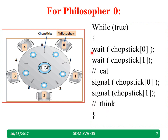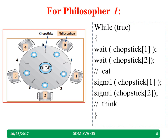After some time the philosopher feels hungry again, takes the chopsticks, eats, and keeps the chopsticks back. Similarly, philosopher 1 waits for chopstick 1 and chopstick 2. Once finished eating, they put the chopsticks back on the table and start thinking again.